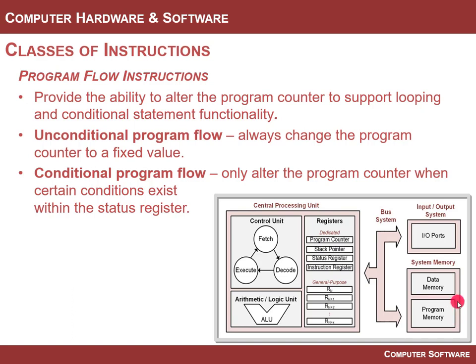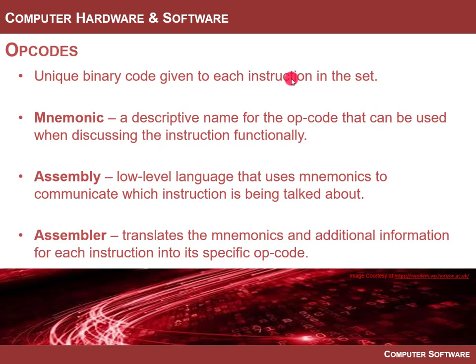You might ask: how do I know what conditions I can look at? That's found in the status register. Your carry flags, negative flags, zero flags, and two's complement flags can be examined. For example, you can say: if there was a carry, go ahead and move the program counter down to a different location. That's the third class of instructions.